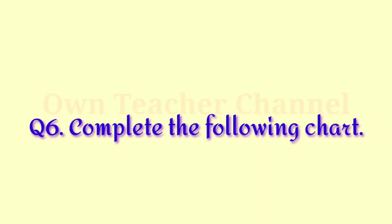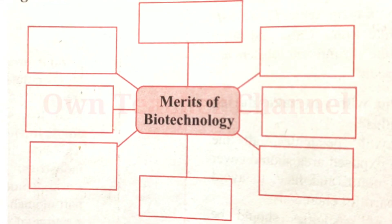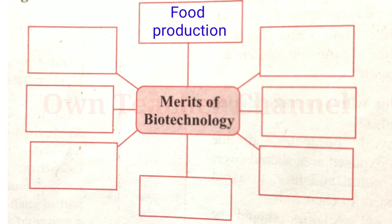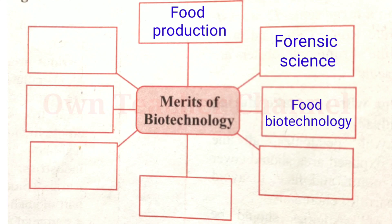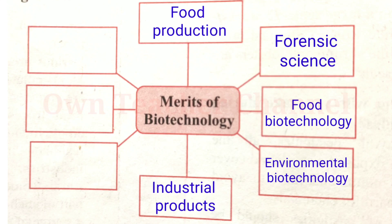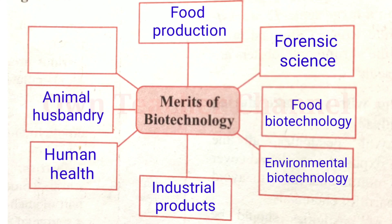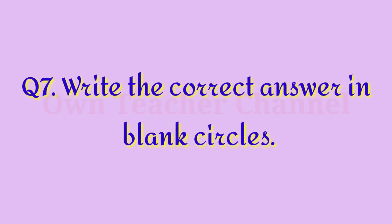Question 6: Complete the following chart on merits of biotechnology. The fields include: Food production, Forensic science, Food biotechnology, Environmental biotechnology, Industrial products, Human health, Animal husbandry, and Crop biotechnology.